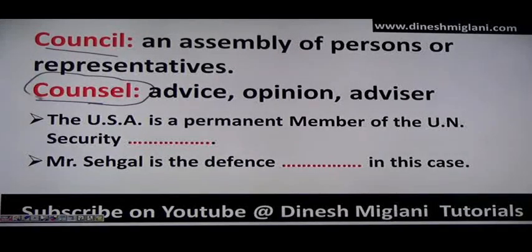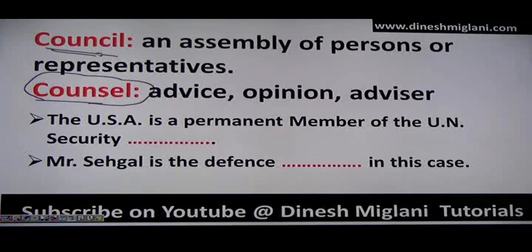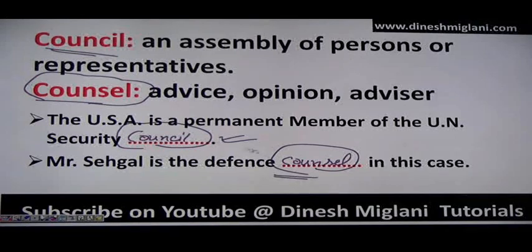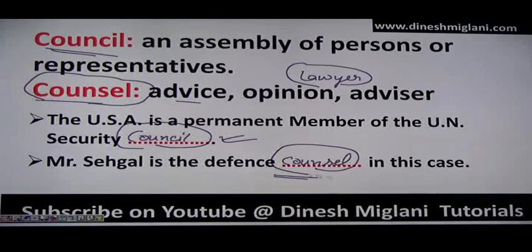For example, the USA is a permanent member of the UN Security Council — that is an assembly of representatives. 'Mr. Segal is the defense counsel in this case' — counsel is used for a person who gives advice, so it refers to a lawyer or advocate. So counsel means advisor or lawyer, and council is an assembly or representative body.